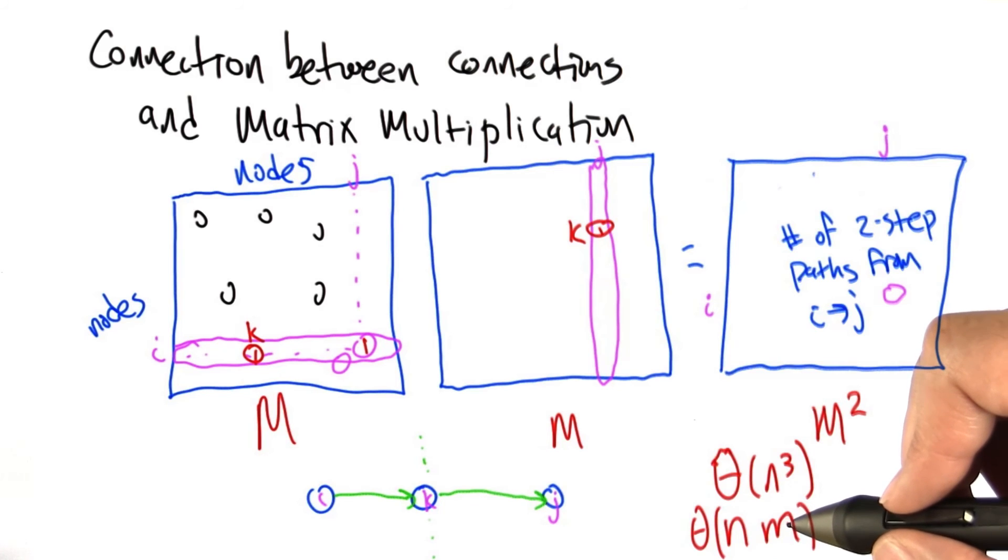If m is a dense matrix, then this is n squared. So this algorithm ends up being n cubed again. But if it's a sparse matrix, so the number of edges is linear, like in a planar graph, for example, then this is n squared, which is actually a lot better.